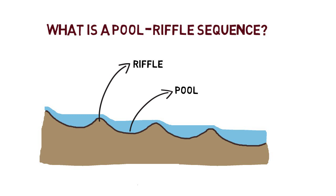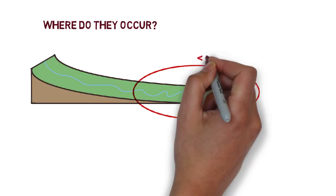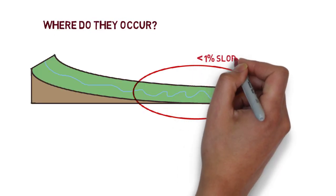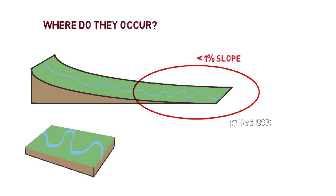They occur in portions of streams with gentle average slopes, usually less than a 1% decline. Theories have changed over time, but it is now understood that pool-riffle sequences are surprisingly ubiquitous, occurring in both alluvial and bedrock streams and in both meandering and relatively straight streams.